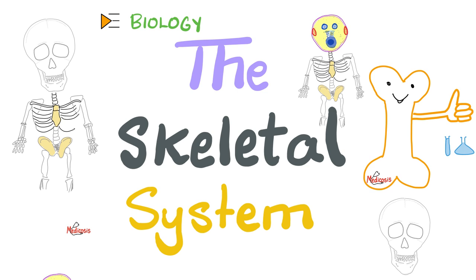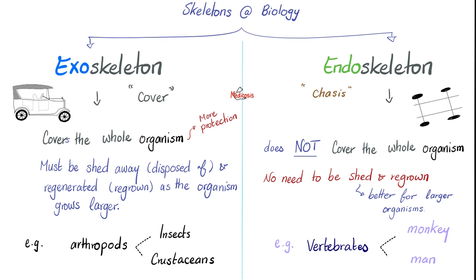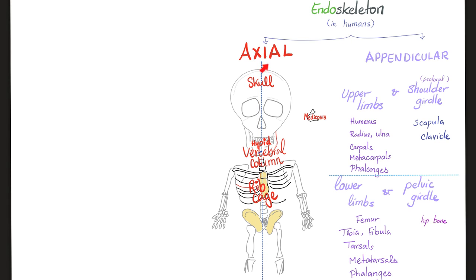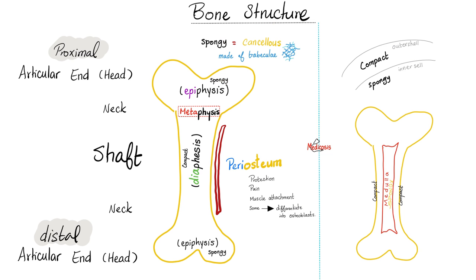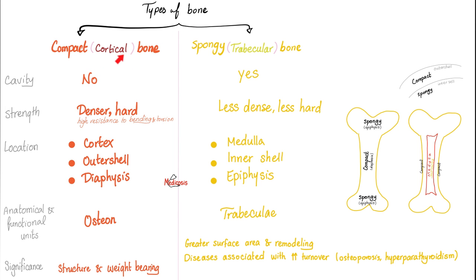Let's talk about bones and cartilages. Humans have an endoskeleton, not an exoskeleton. Your endoskeleton has an axial part in the midline and an appendicular part to the left and right. Your bone has an epiphysis, diaphysis, and metaphysis in between, as well as an articular end or head and a shaft. The outer shell is compact bone; the inner shell is spongy bone near your medulla. Here is a comparison between compact bone and spongy or trabecular bone.